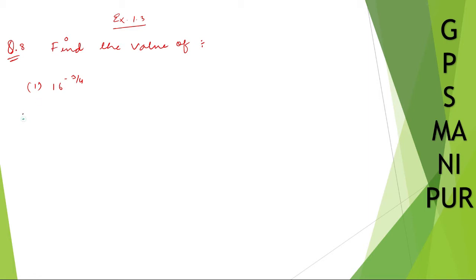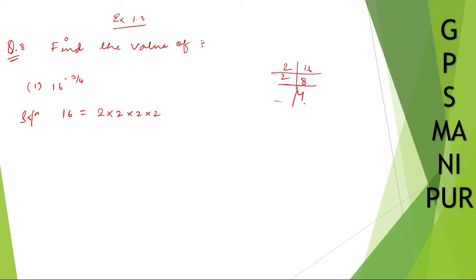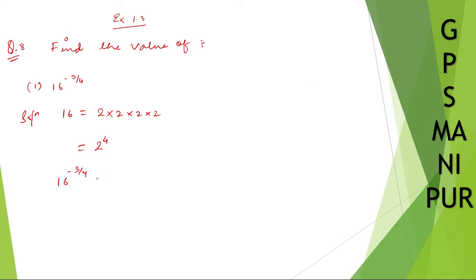We can write 16 as 2 into 2 into 2 into 2. That's four 2s, so 16 equals 2 to the power 4. Therefore, 16 to the power minus 3 by 4 can be written as 2 to the power 4, into minus 3 by 4. I hope you understood this much.